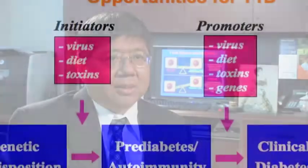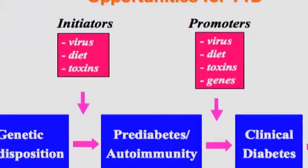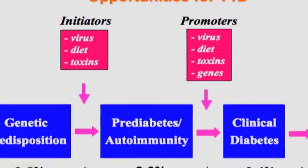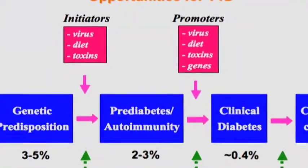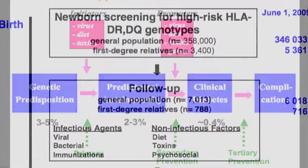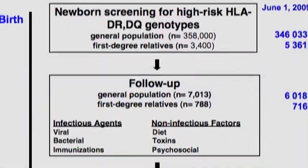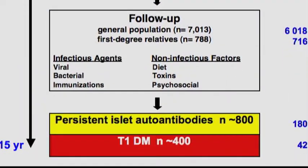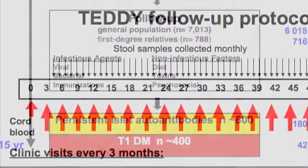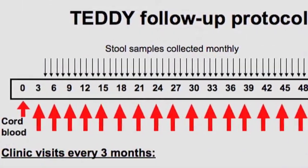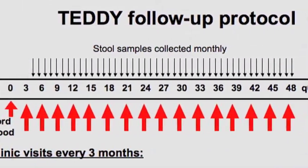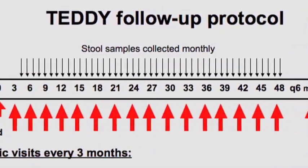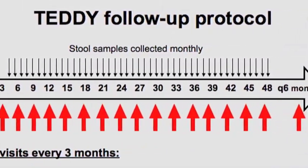About 5% will develop type 1 diabetes over the next 15 years. We then compare the environmental factors in this 5% of children who develop type 1 diabetes versus the 95% who will not develop the disease.